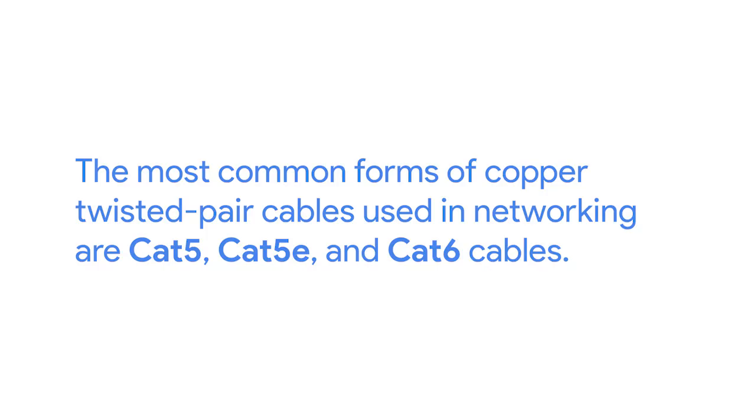The most common forms of copper twisted pair cables used in networking are Cat5, Cat5e, and Cat6 cables — shorthand for Category 5 or Category 6 cables. These categories have different physical characteristics, like the number of twists in the pair of copper wires, that result in different usable lengths and transfer rates.